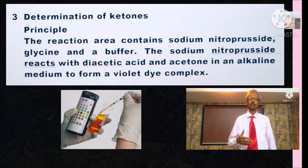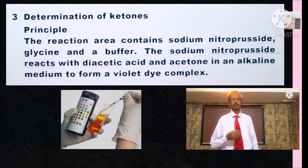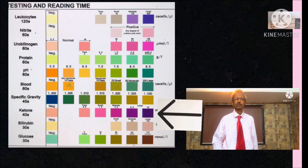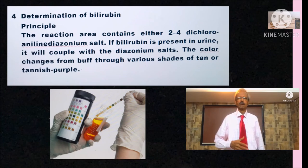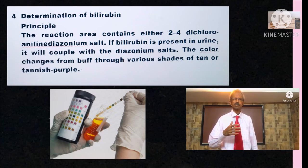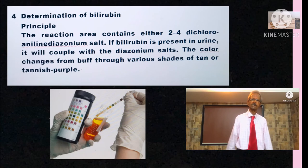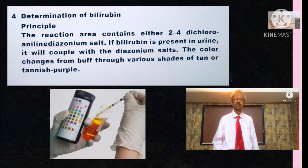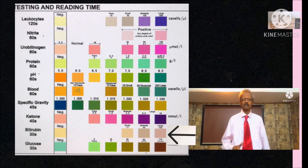For the determination of ketones, the reaction area contains sodium nitroprusside, glycine and a buffer. The sodium nitroprusside reacts with diacetic acid and acetone in alkaline medium to form violet dye complex. Then for determination of bilirubin, the reaction area contains 2,4-dichloro-aniline diazonium salt. If bilirubin is present in urine, it will couple with the diazonium salt and color changes from buff to various shades of tan or purple.